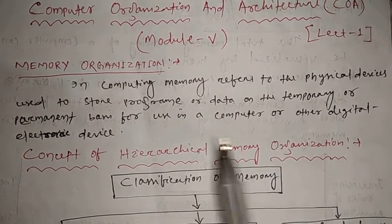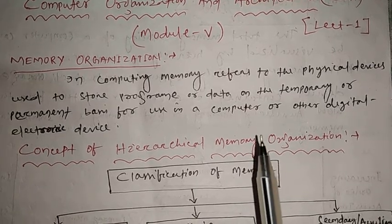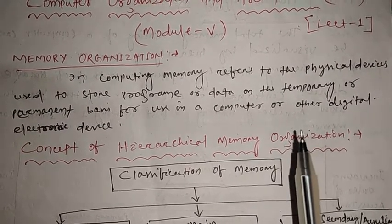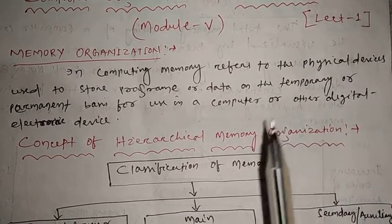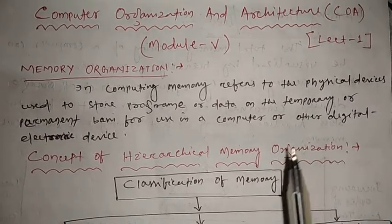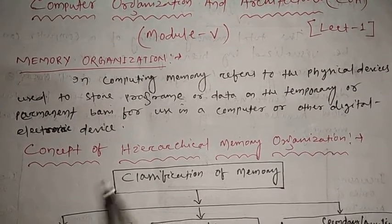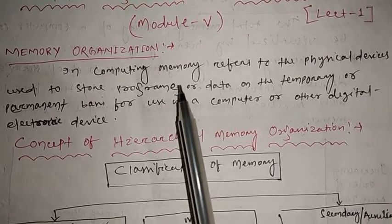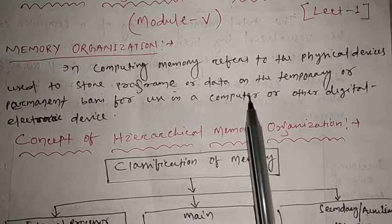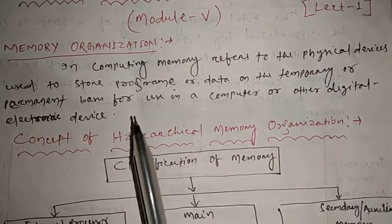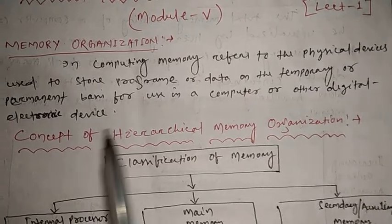This memory is used in computers and any electronic gadgets like mobiles, calculators, and laptops. In every device, we use memory to store information and data. So, in computing, memory refers to the physical device used to store programs or data on a temporary or permanent basis in a computer or other digital electronics devices.